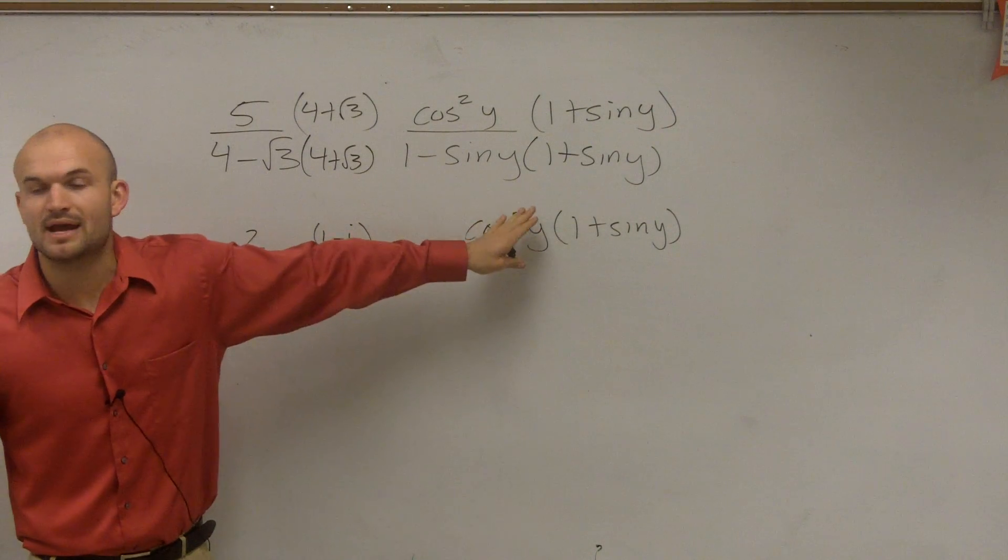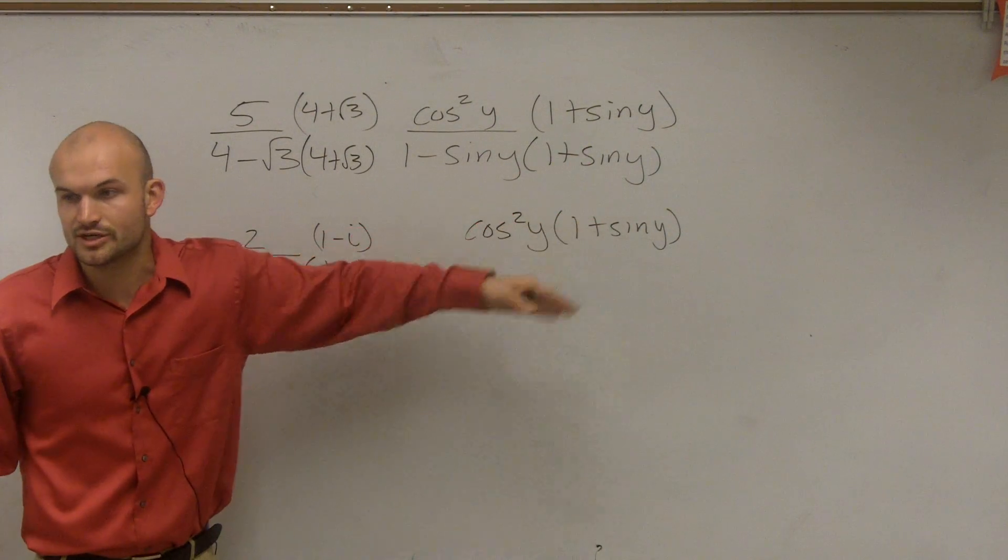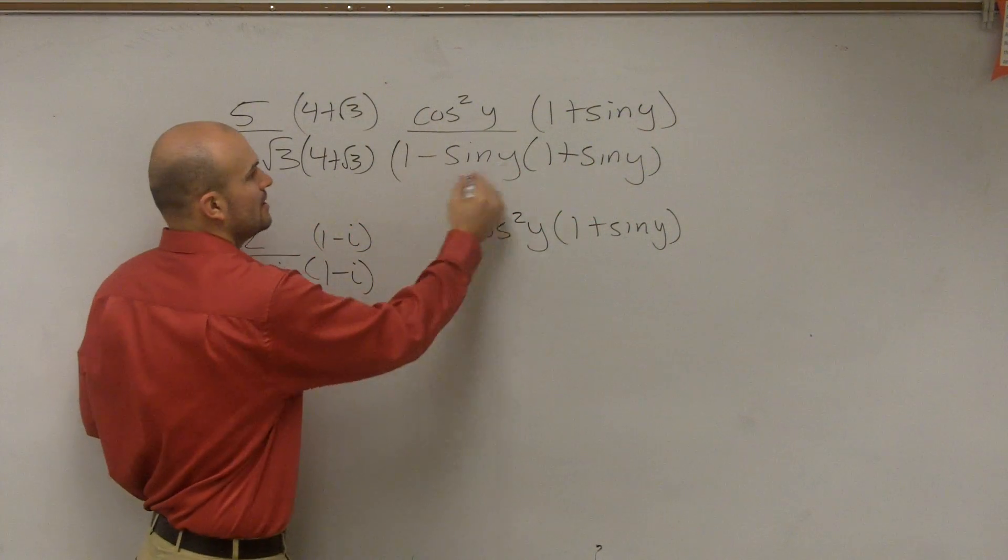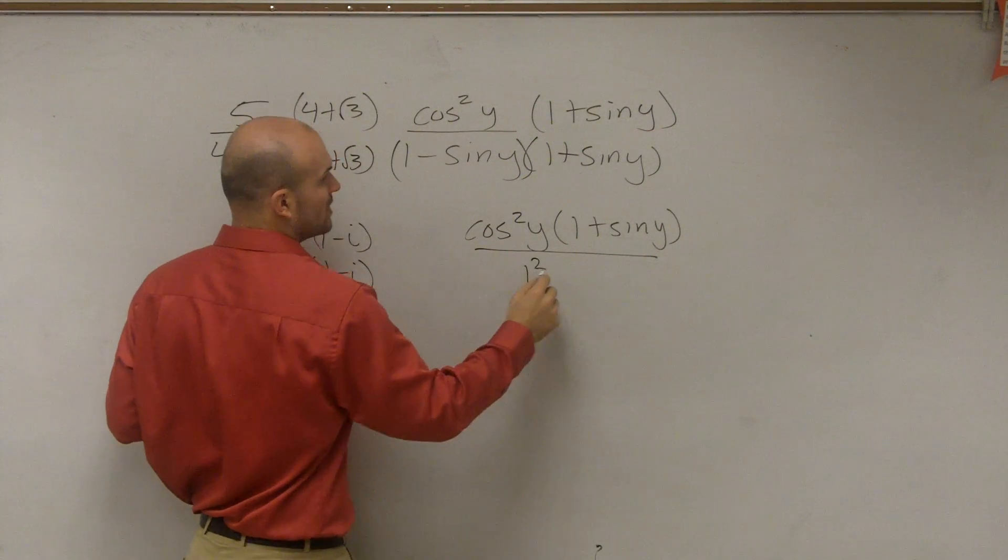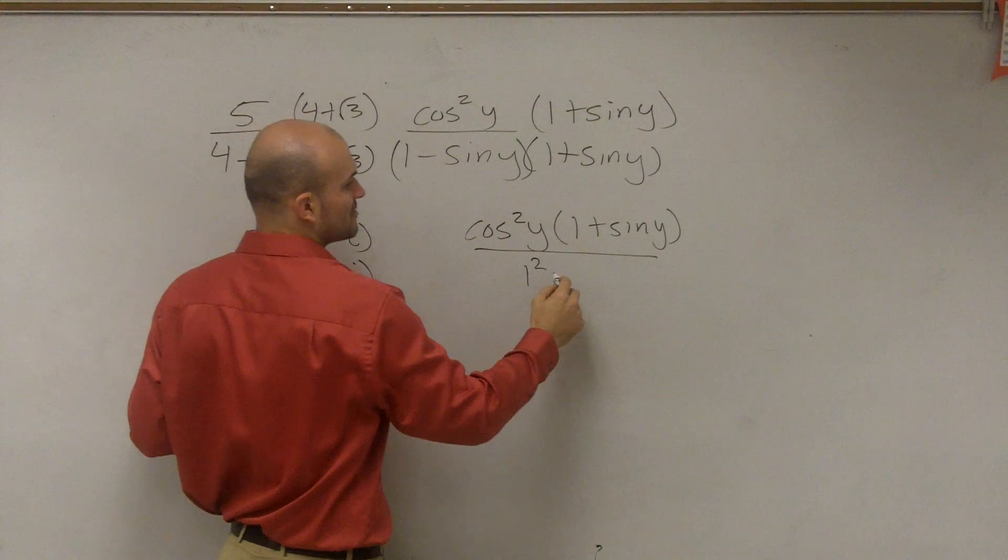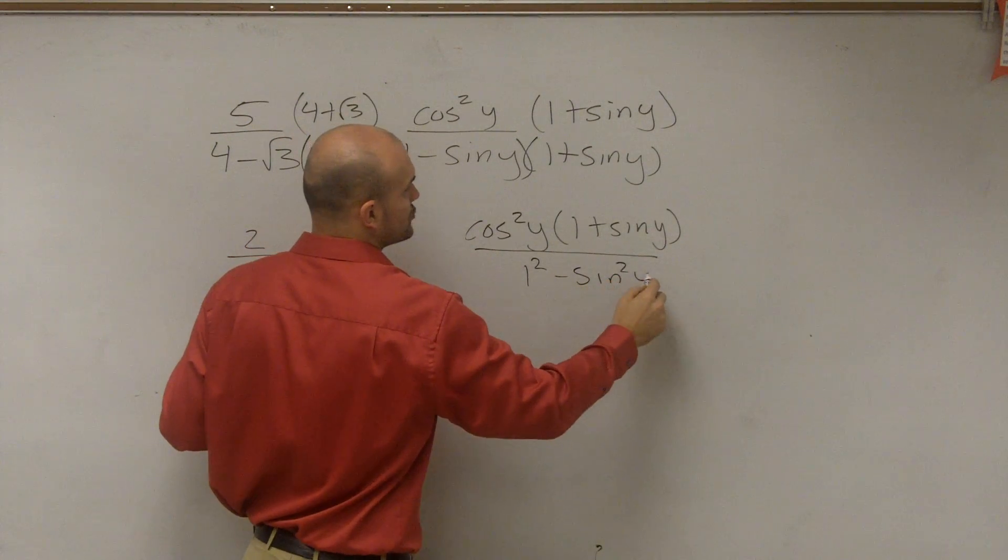Now, remember when you multiply a binomial by its conjugate, you create a difference of two squares, meaning all you need to do is multiply the first two terms, which would be 1 squared, and multiply the second two terms, which would be minus sine squared of y.